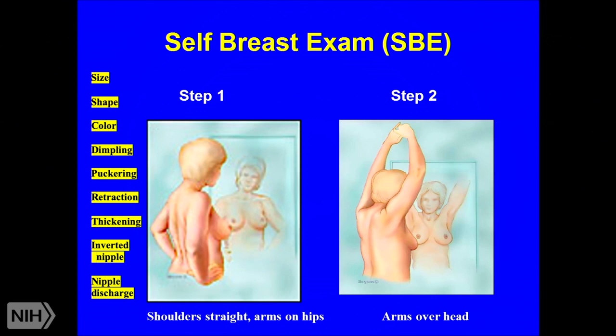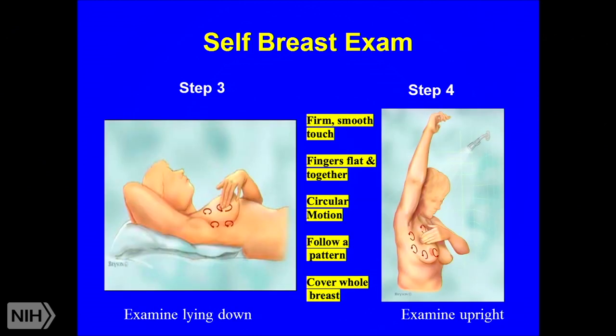For the self breast exam: some people do it monthly, correlating with their menstrual cycle. The first step is to stand straight, look in a mirror with shoulders straight and arms on hips, looking for any changes in size, shape, color, dimpling, puckering, or retractions. Repeat with arms over the head. Then perform the exam lying down using a firm, smooth touch, following a pattern to cover the whole breast, and check the lymph node area as well.